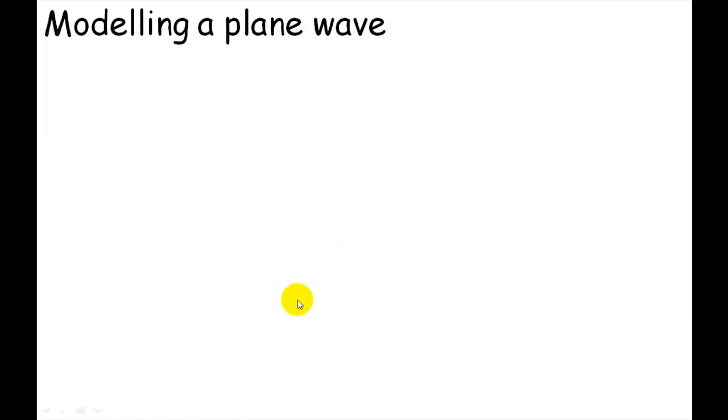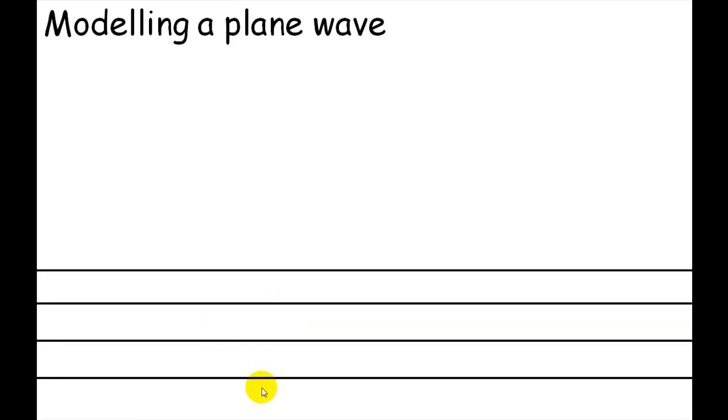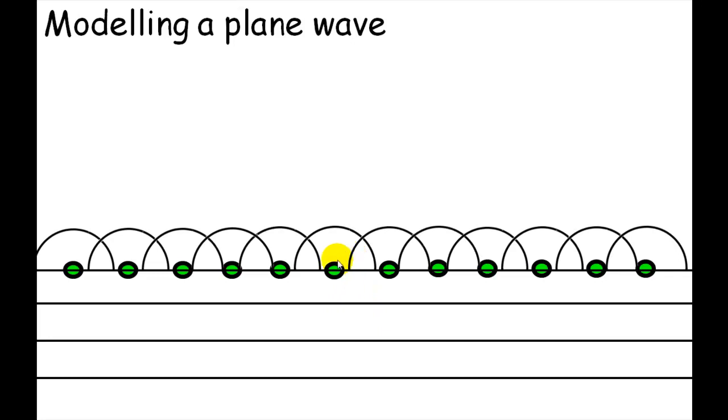The positive displacements will be cancelling out with the troughs or the negative displacements of the other wavelets here. Or you could think of it as the troughs will be all adding up here. So the more you get, the more you can basically replace this complicated picture with a simple picture of here is the positive displacement of the wave, or the peak, and here is the trough of the wave. So let's look at modelling a plane wave. This would be like the ripples in the ripple tank moving forward from the beam that is bouncing up and down.